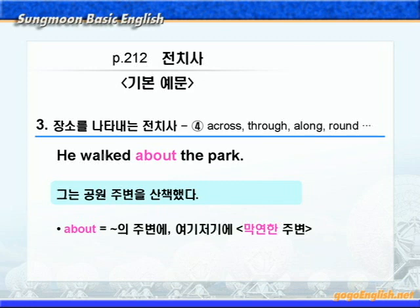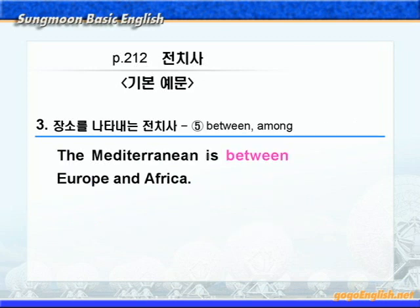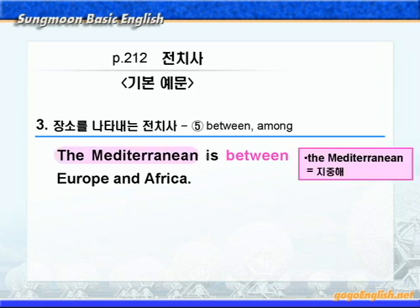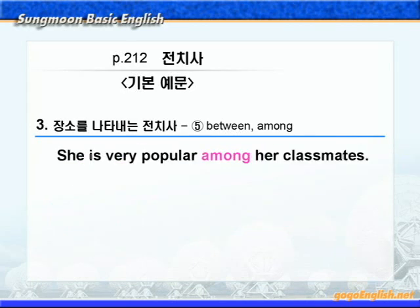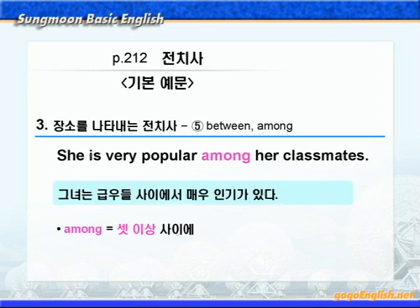다음으로 between과 among에 대해서 살펴보죠. 기본 예문 동그라미 5번이에요. Mediterranean은 '지중해'라는 뜻이죠. between은 '둘 사이에'라는 뜻이니까, '지중해는 유럽과 아프리카 사이에 있다'가 됩니다. 다음으로 among에 대해서 살펴보죠. among은 '셋 이상 사이에'라는 뜻이니까, '그녀는 그분들 사이에서 매우 인기가 있다'가 됩니다.